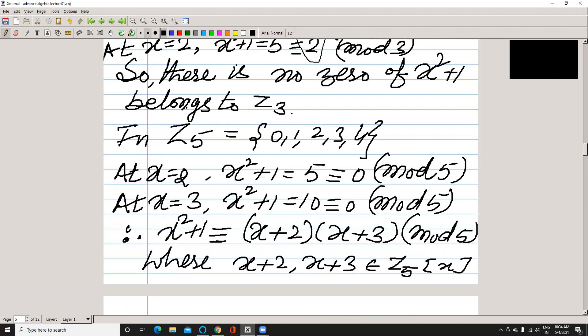Also by substituting x = 3 we get 0. It means that x² + 1 is reducible over Z₅, and x² + 1 can be expressed as (x + 2)(x + 3). Clearly x² + 1 is reducible over Z₅.